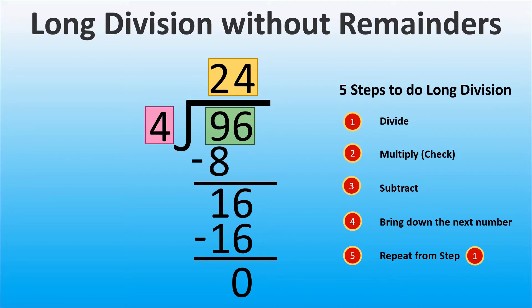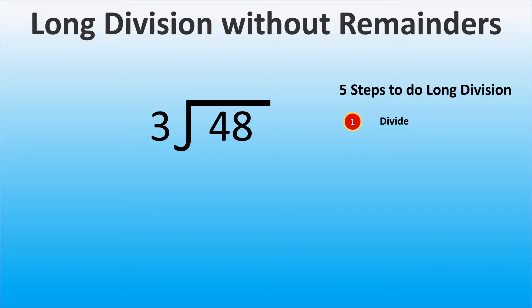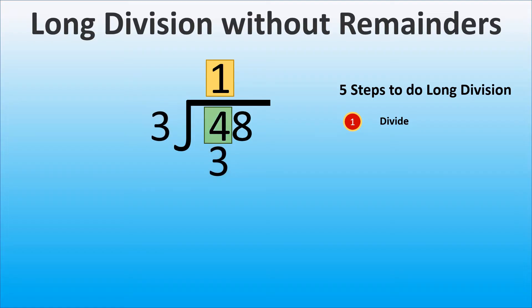Let's practice. We start long division from the number that is in the greatest place value in the dividend, and work our way to the number in the least place value. Thus, here we will start with 4. The closest number to 4 that can be divided by 3, the divisor, is 3. So we write 3 below 4. 3 divided by 3 is 1. Thus, we write 1 above the long division sign on top of 4, in the tens place.